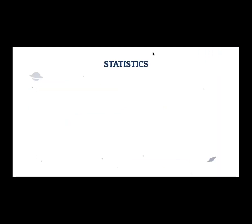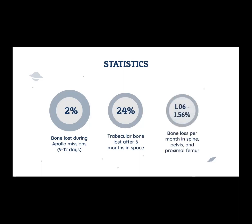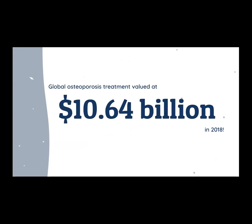Here are some pretty striking statistics. In the nine to twelve day Apollo mission, astronauts experienced a 2% loss of bone. After six months, trabecular bone was reduced by 24%. And bone loss per month in the spine, pelvis, and proximal femur was just over 1%. As if those statistics weren't compelling enough, the global osteoporosis treatment market was valued at over 10 billion US dollars in 2018. We know that one in four women and one in twenty men above the age of 65 suffer from osteoporosis, indicating a high demand and increased need for a viable and cost-effective treatment.